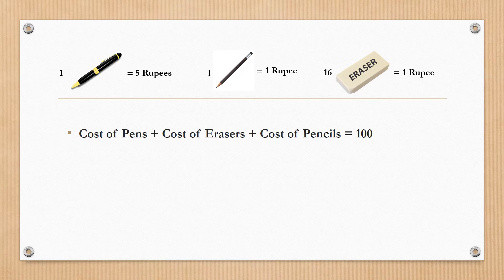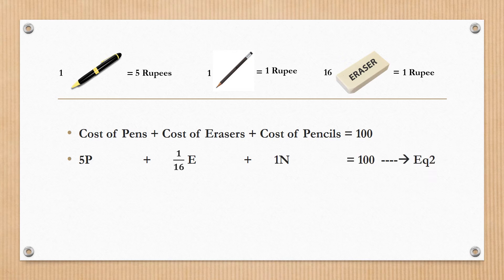Second equation: cost of pens, 5 into P, plus cost of erasers, 1/16 into E, plus cost of pencils, 1 into N. So 5P plus 1/16 E plus N equals 100.